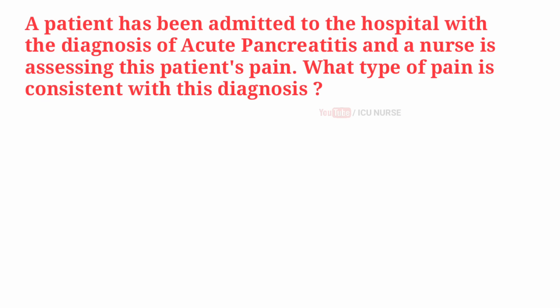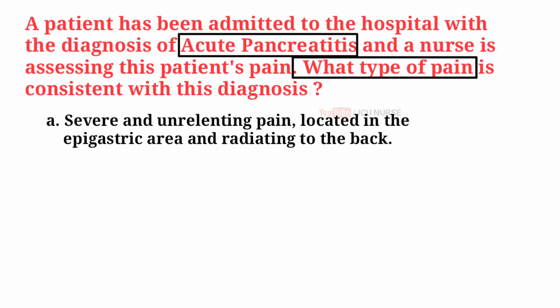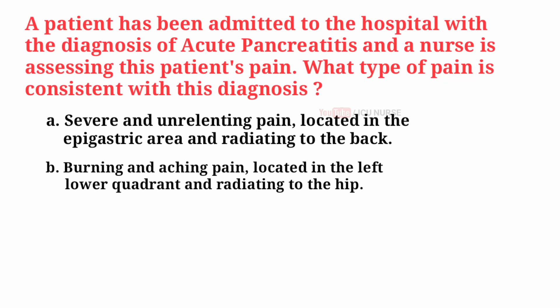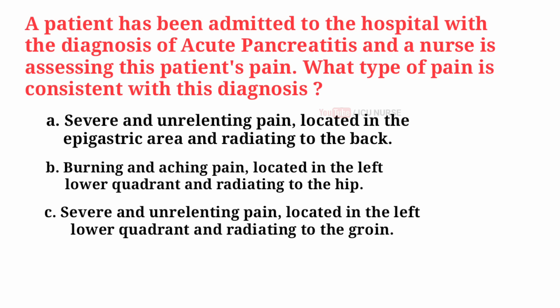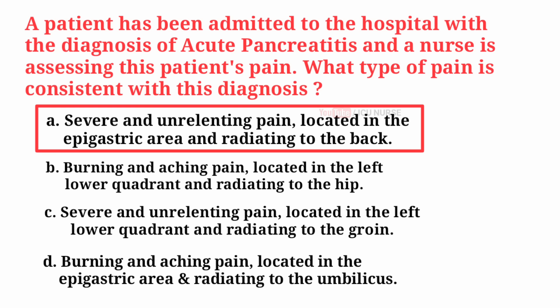A patient has been admitted to the hospital with a diagnosis of acute pancreatitis, and a nurse is assessing this patient's pain. What type of pain is consistent with this diagnosis? A. Severe and unrelenting pain located in the epigastric area and radiating to the back. B. Burning and aching pain located in the left lower quadrant and radiating to the hip. C. Severe and unrelenting pain located in the left lower quadrant and radiating to the groin. D. Burning and aching pain located in the epigastric area and radiating to the umbilicus. And the correct answer is A — severe and unrelenting pain located in the epigastric area and radiating to the back.